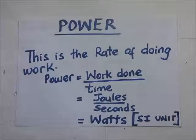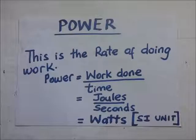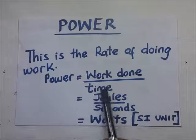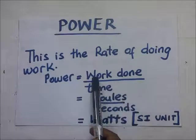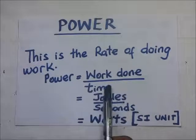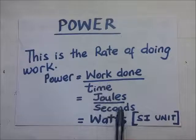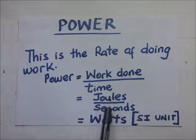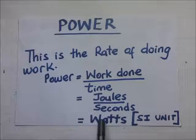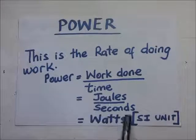Power is the rate at which work is done, and its formula is work done over time taken. The SI unit for work is joules, the SI unit for time is seconds, so one joule per second is equivalent to one watt.